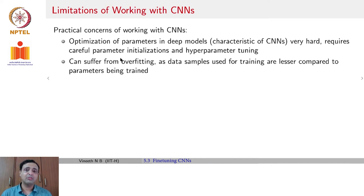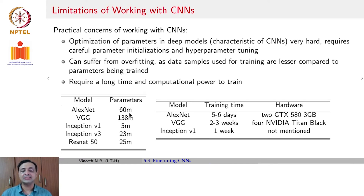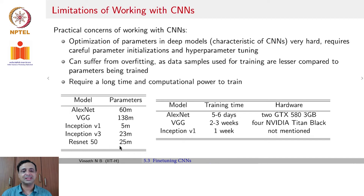Secondly, CNNs can suffer from overfitting because data samples used for training are generally much fewer in number than the parameters being trained. AlexNet has 60 million parameters, VGG has 138 million, Inception v1 had 5 million parameters, an improved version called Inception v3 had 23 million parameters, and ResNet 50 had 25 million parameters, and so on.